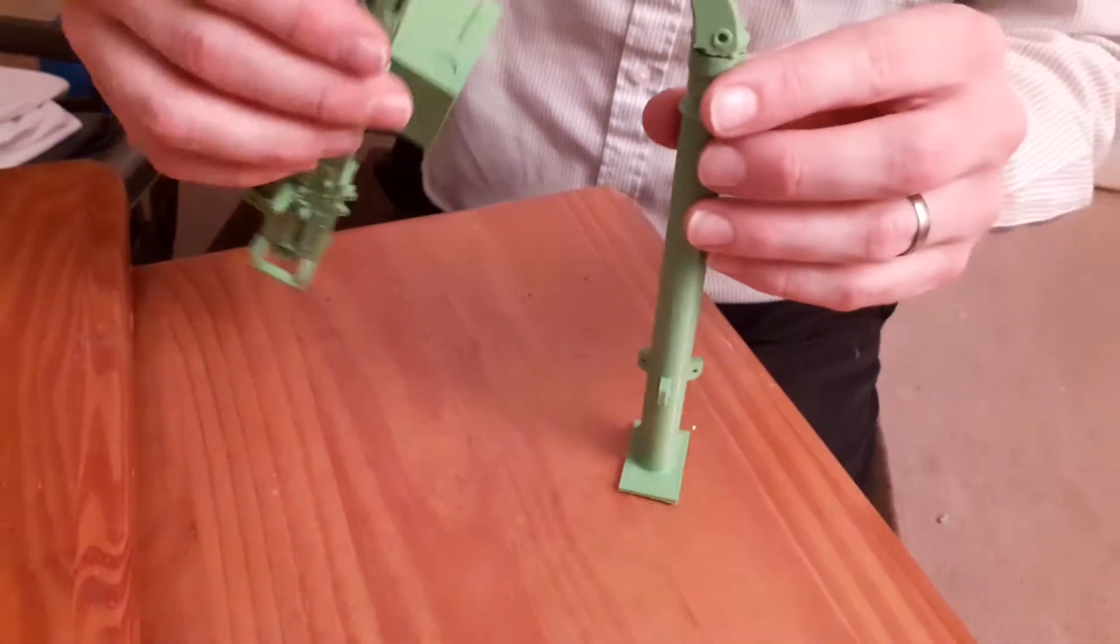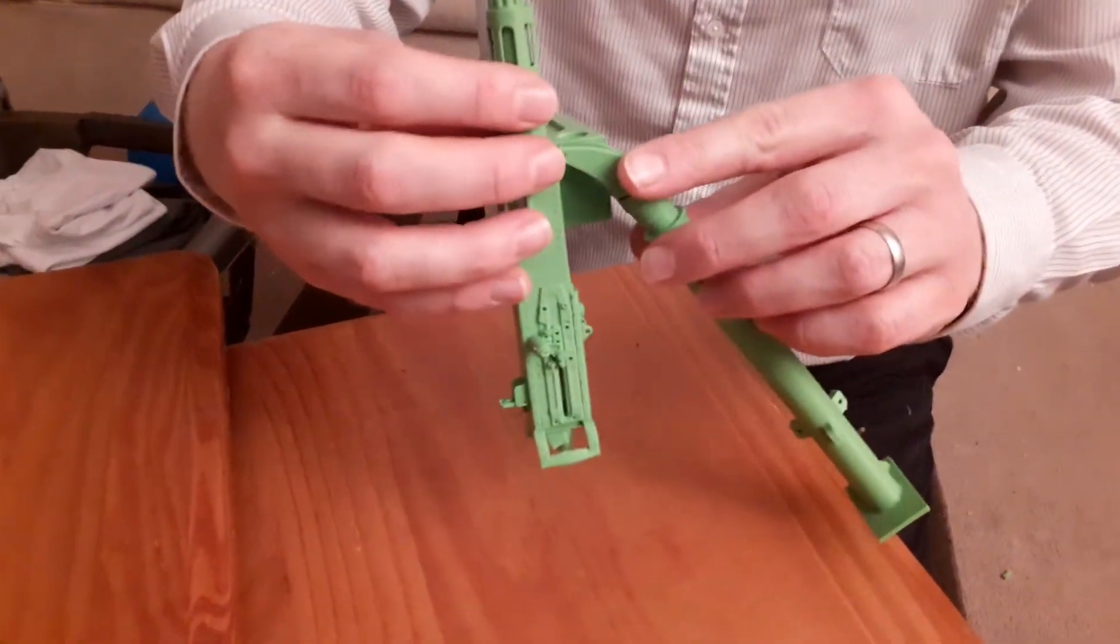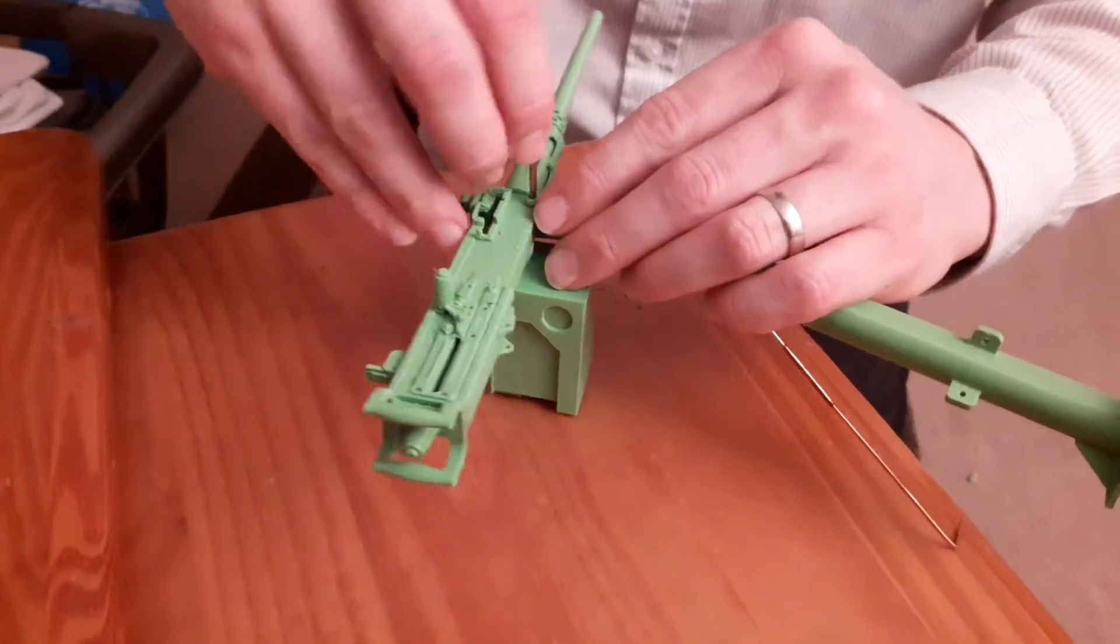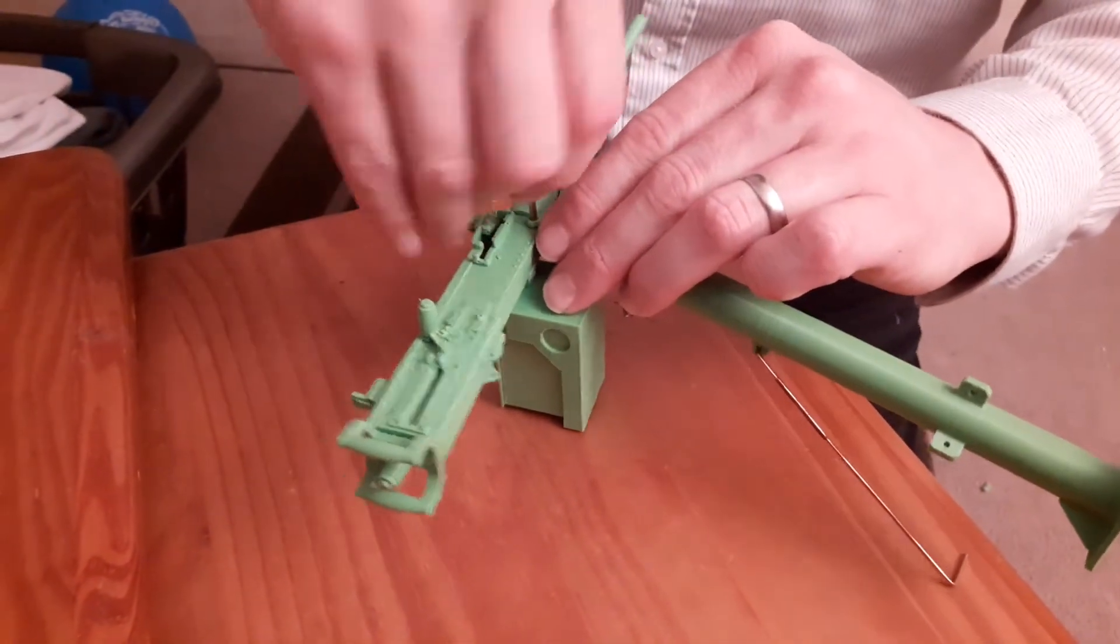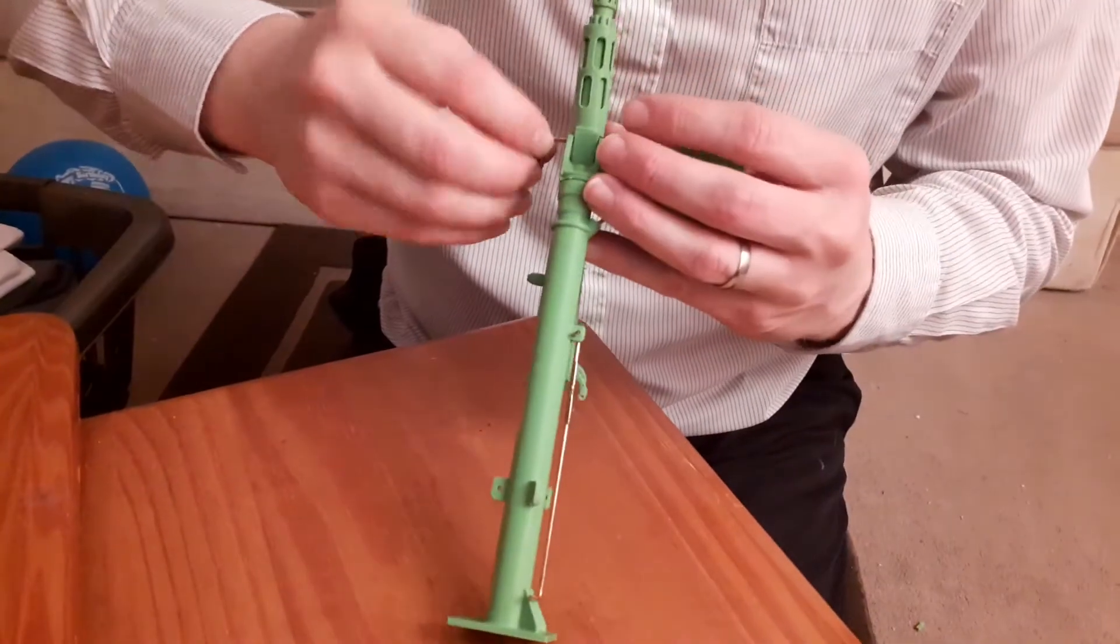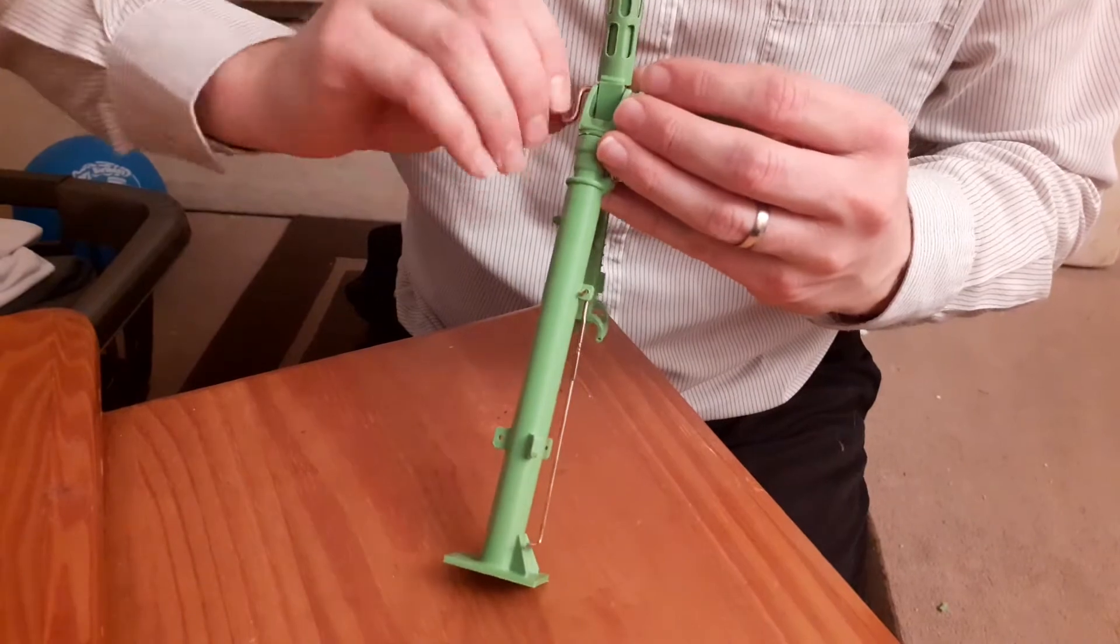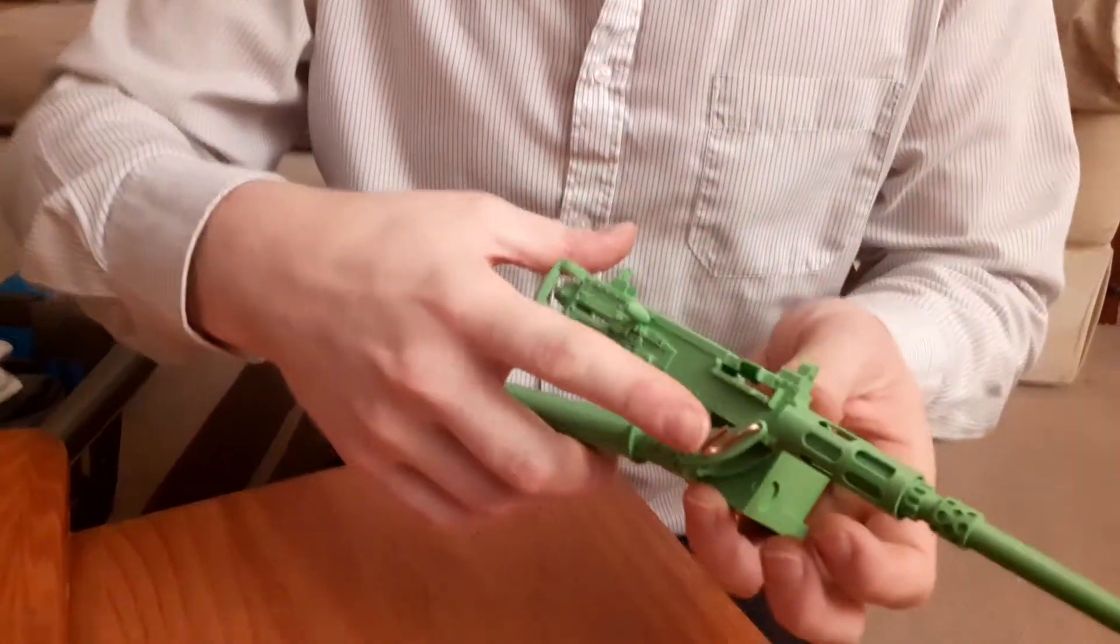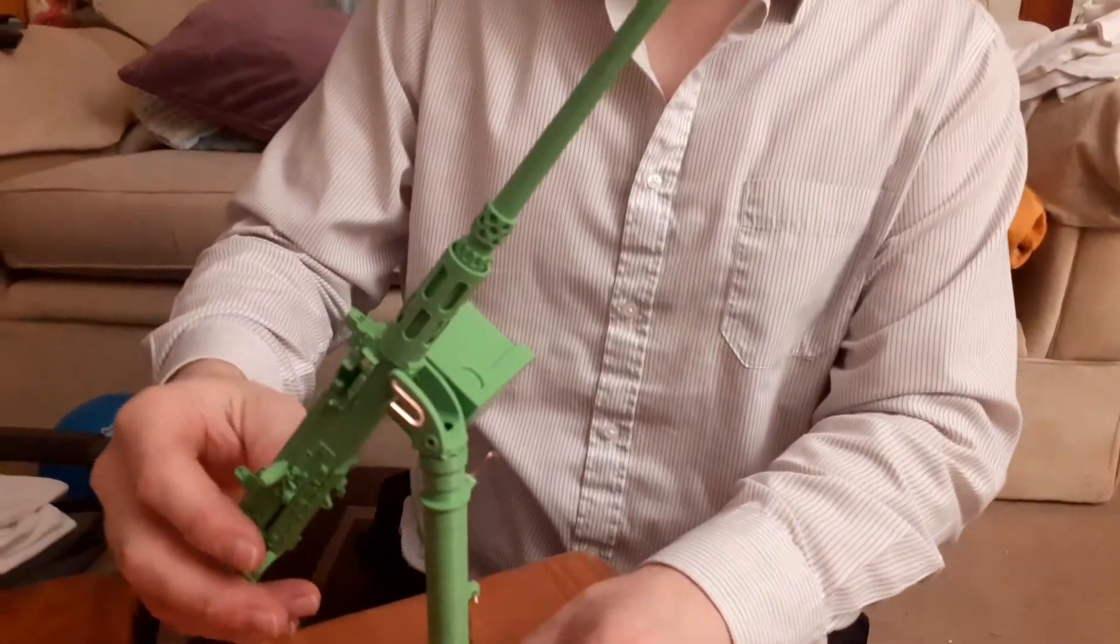To assemble the .50 cal mount, there's a metal pin. Just be careful when you're doing this because the plastic is very thin, so it's not hugely strong. Put it in there like that. Right, that's now in.